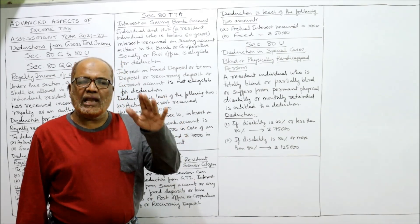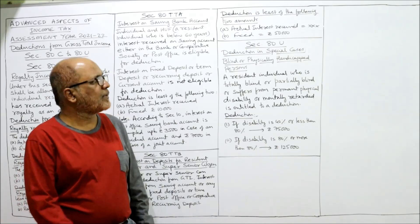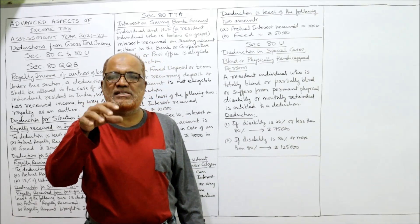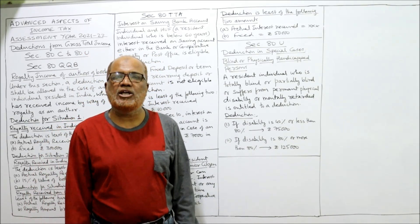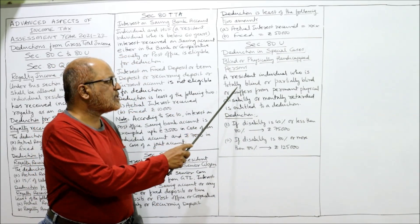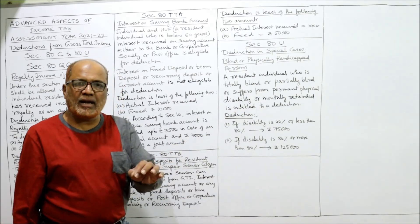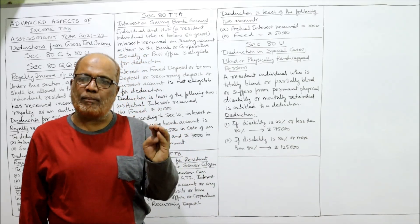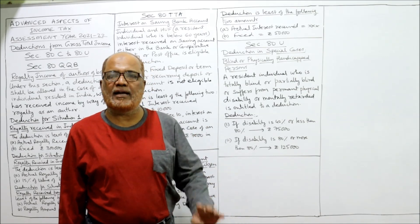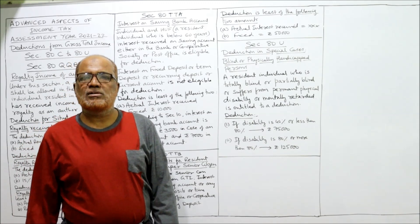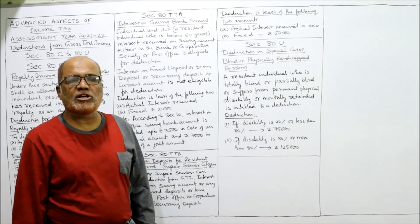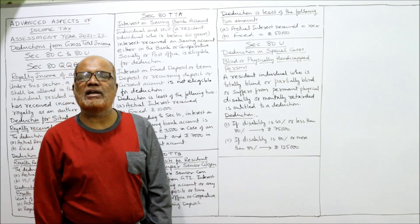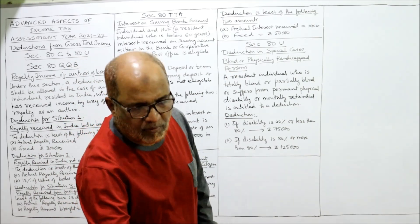The last and final deduction is section 80U — deduction in special cases for blind or physically handicapped persons. A resident individual who is totally blind, partially blind, suffers from permanent physical disability, or mental retardation is entitled to a deduction. If the disability is 40% to 80%, the deduction is ₹75,000. If the disability is more than 80%, the deduction amount is ₹1,25,000.